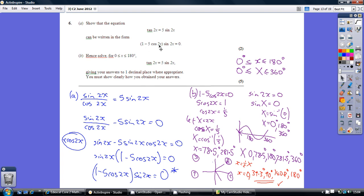So for this product to be 0, either the first bracket has to be 0 or effectively the second bracket sine 2x has to be 0. So we have two separate ways we can get a product of 0.